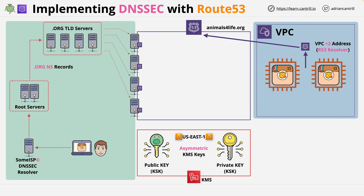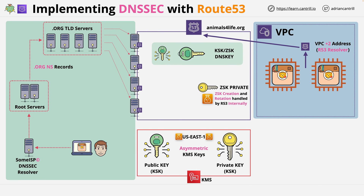Route 53 creates the zone signing keys internally. Both the creation and management of the zone signing keys is handled internally within Route 53 — KMS isn't involved. Route 53 then adds the key signing key and the zone signing key public parts into a DNS key record within the hosted zone. This tells any DNSSEC resolvers which public keys to use to verify the signatures on any other records in the zone.